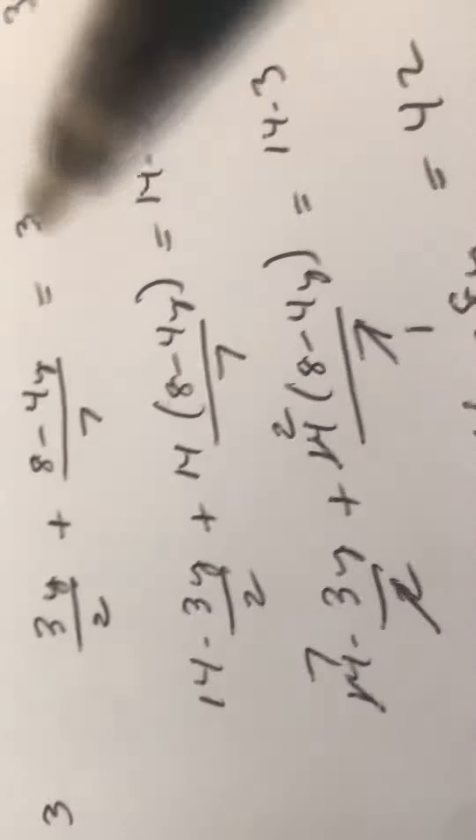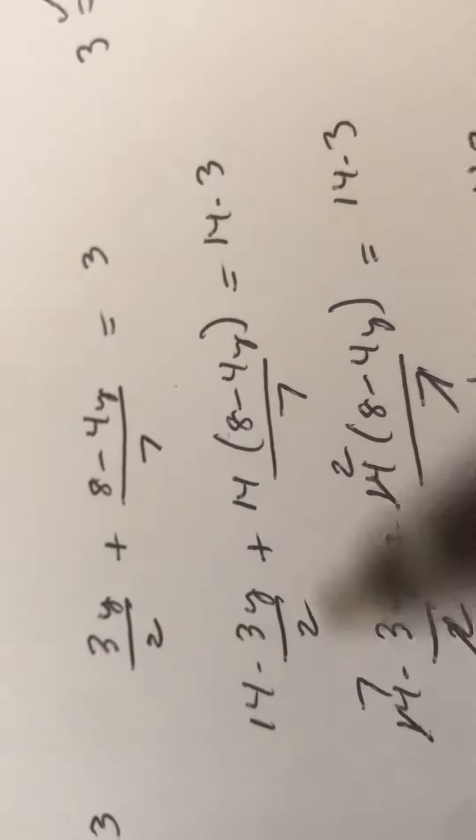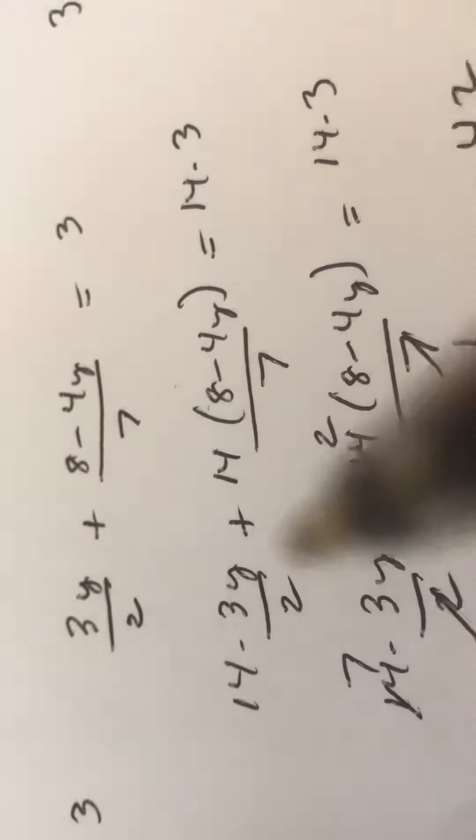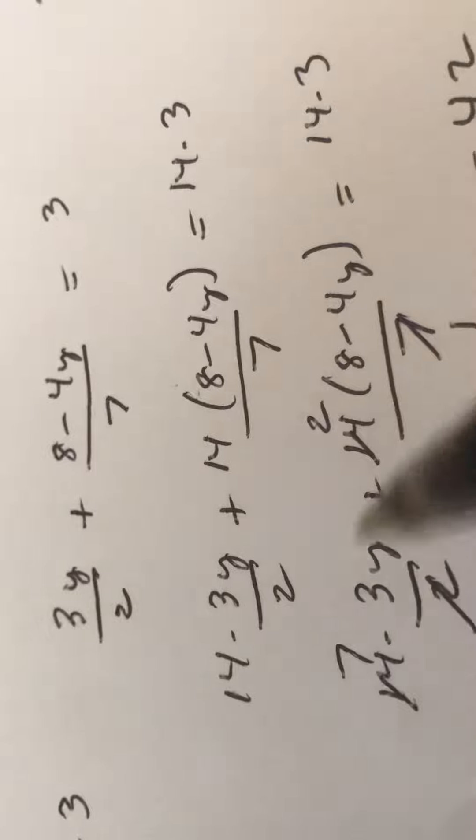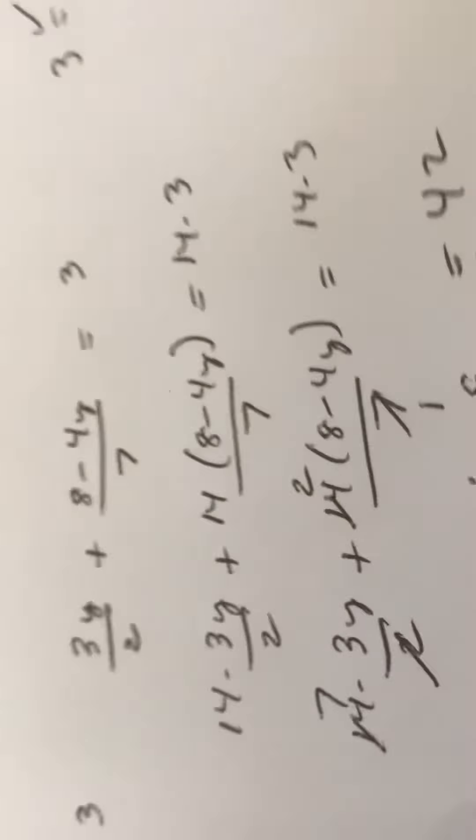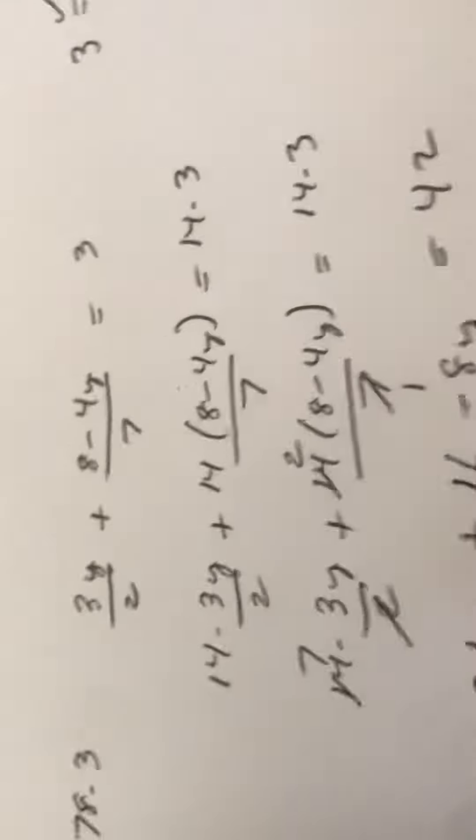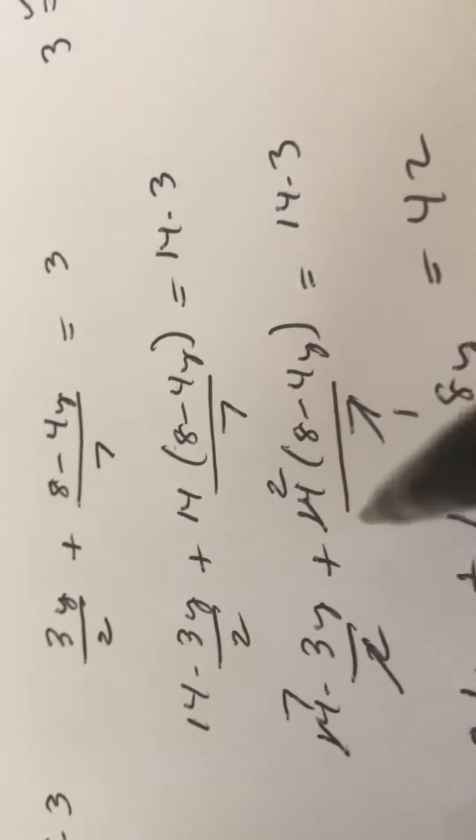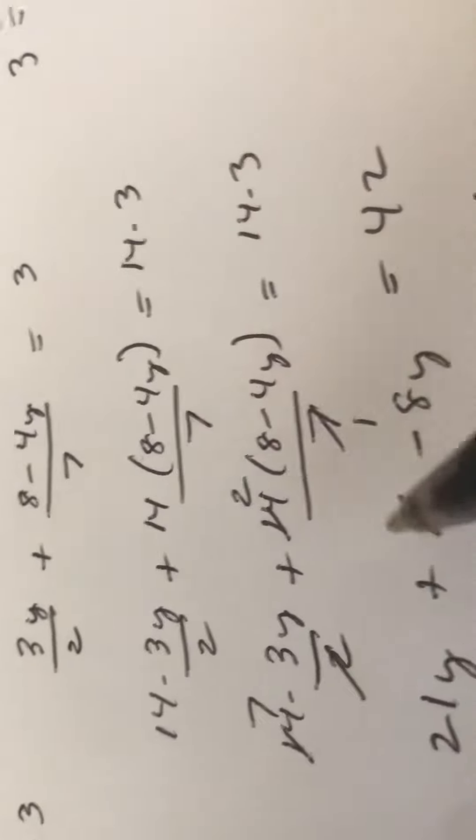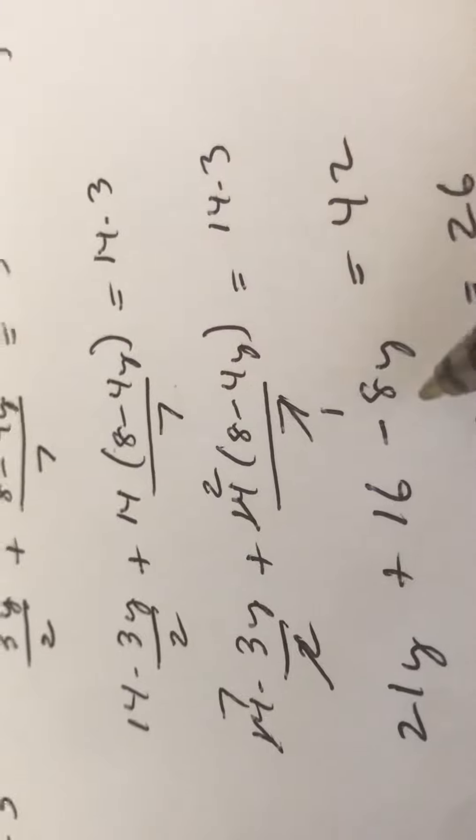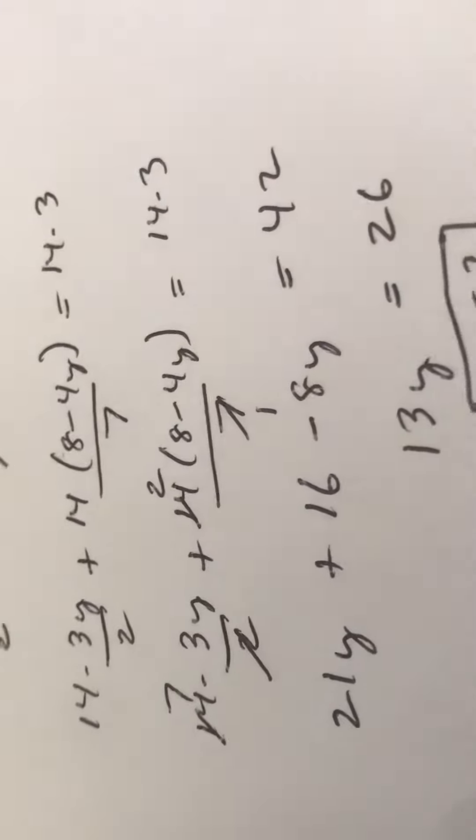But you have to multiply each term by 14. Otherwise it doesn't stay equal. Two goes in once, goes in seven, and then you cancel. So then anyway, 21y, then we use the distributive property. 2 times 8 is 16, 2 times minus 4y is minus 8y, equals 42.